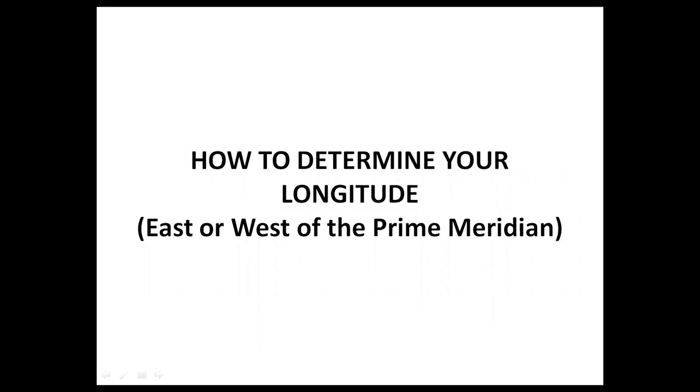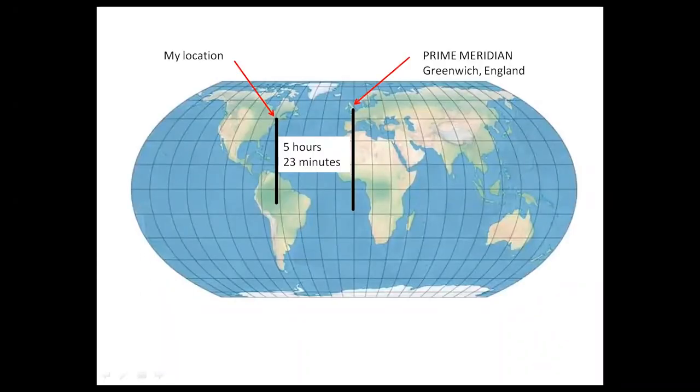Now that we've determined our latitude, how do we determine longitude east or west of the prime meridian? Today we simply note the time difference between solar noon at our location and that of Greenwich, England, the prime meridian. It wasn't until 1760 that an accurate mariner's clock was invented to achieve this. The clock was set to universal time or UT, once known as Greenwich Mean Time or GMT. We would deduce the difference between our location's solar noon and that of the prime meridian, which is shown here to be plus 5 hours and 23 minutes. Knowing the Earth rotates 15 degrees every hour, we multiply the two and almost have our longitude position west of the prime meridian. We need to make one correction for solar time.